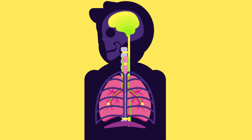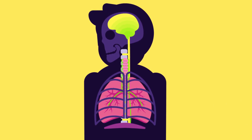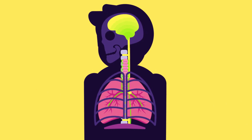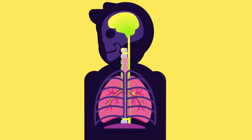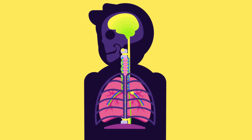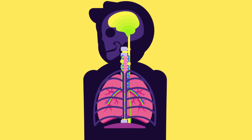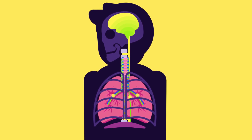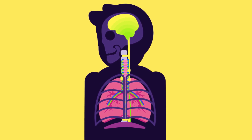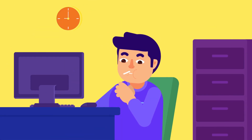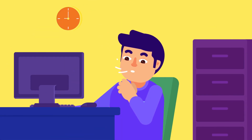As you breathe in, stretch receptors in the lungs stimulate. The receptors in your reflex arc, which inhibit inspiration, activate and prevent the lungs from stretching far enough to cause damage. Then, after we finish inhaling, the expiratory neurons fire and expiration occurs. Normal breathing is thus maintained in part by a series of reflex actions.